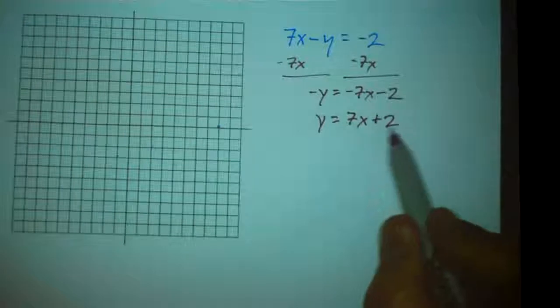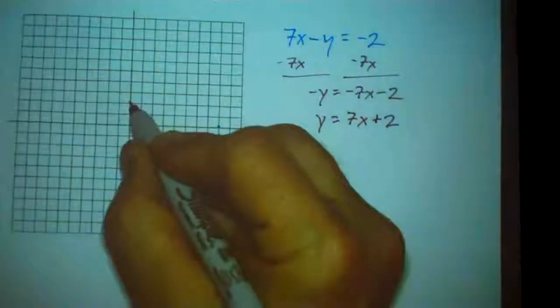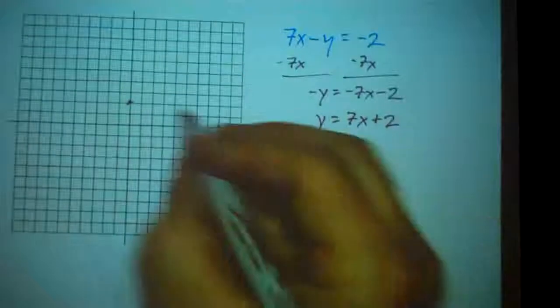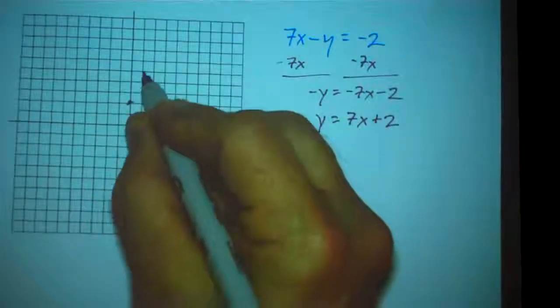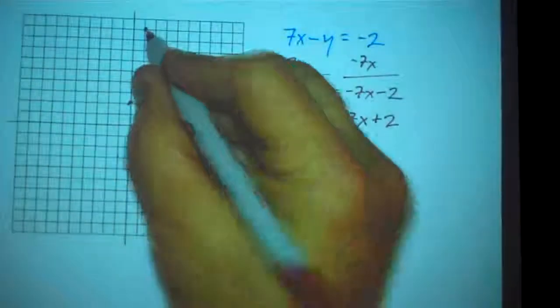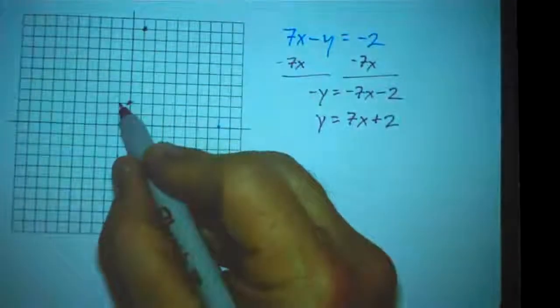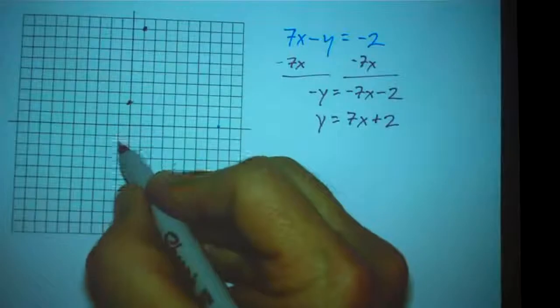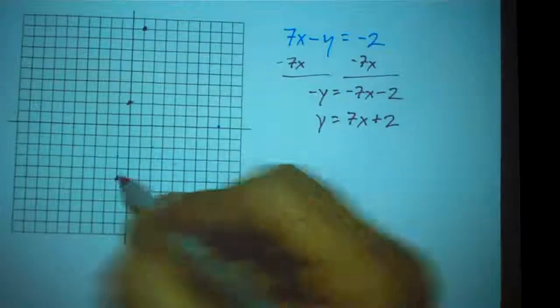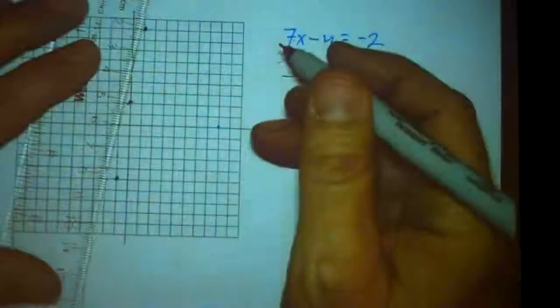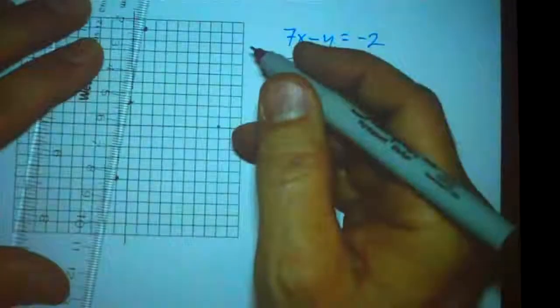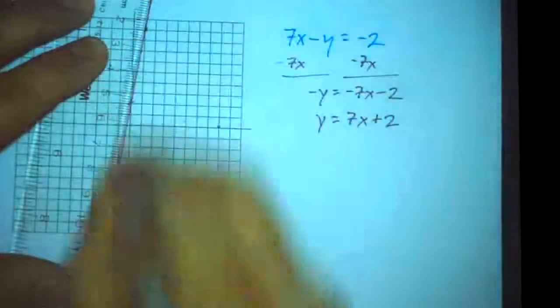That tells me my y-intercept is the point 0, 2. So I start at 0, 2. And it tells me that the slope is 7. So as my x increases by 1, my y increases by 7. 1, 2, 3, 4, 5, 6, 7. It's a very steep line. I go to the left one, I go down 7. 1, 2, 3, 4, 5, 6, 7. And there's my line there. Something kind of like this.